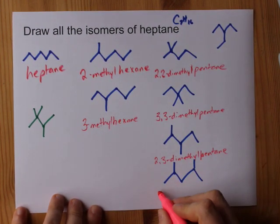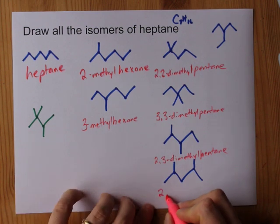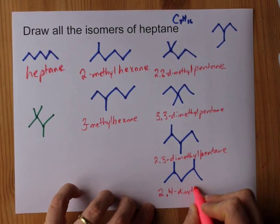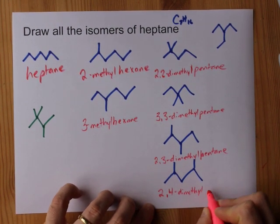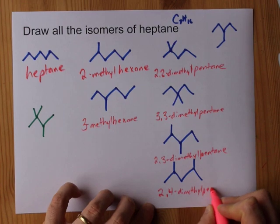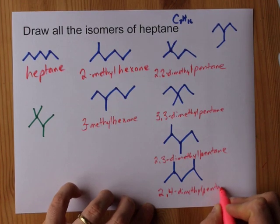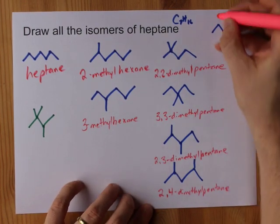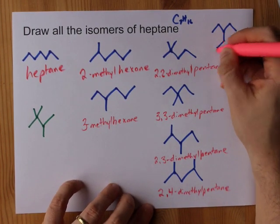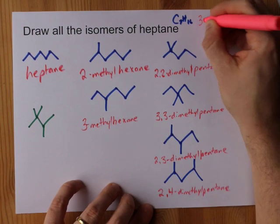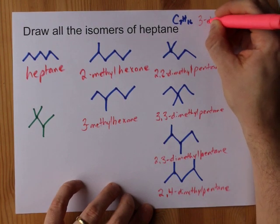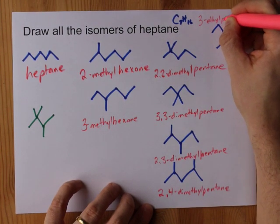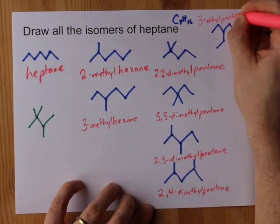Here's another one that's similar: 2,4-dimethylpentane. I can't forget about this one — it has a single ethyl group on carbon 3, making it 3-ethylpentane.